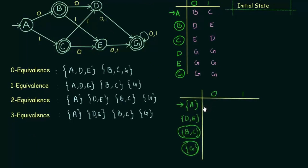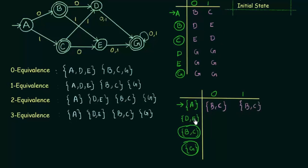Let me draw the transition table for the new minimized DFA. The states are A, DE, BC, and G. A was the initial state in the original DFA, so A is the initial state here too. BC and G are final states. A on input 0 goes to B — so we write BC. On input 1 it also goes to C — we write BC, since C is contained in BC. DE on input 0 and on input 1 both go to state G. BC on input 0 and on input 1 both go to DE.